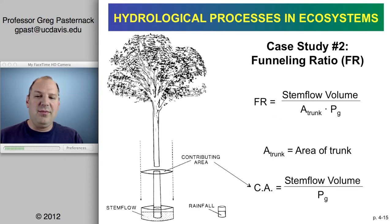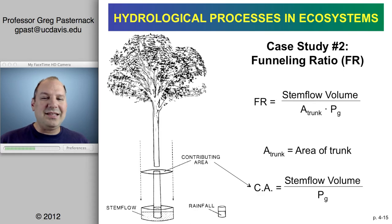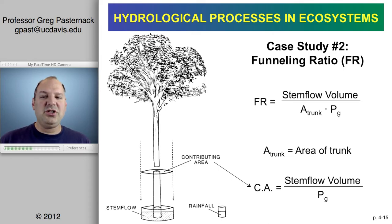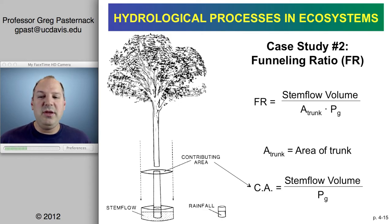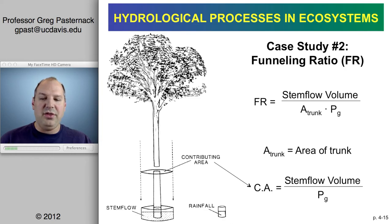The contributing area is calculated by taking the stem flow volume and dividing by the rainfall rate, yielding units of area — the area of canopy supplying water. It's a bit tricky because if you have 100 square meters of canopy and a contributing area of 10 square meters, it doesn't necessarily mean only 10 square meters are contributing. It's an equivalency — any location could contribute sometimes and not others — but the net effect is that on average it's probably a smaller amount than the whole canopy.